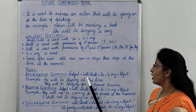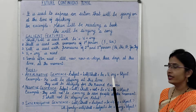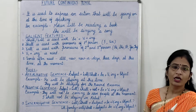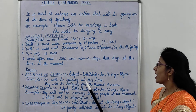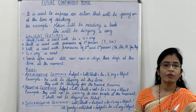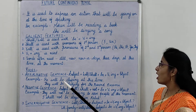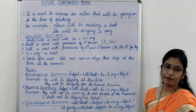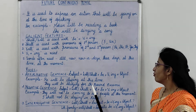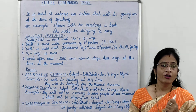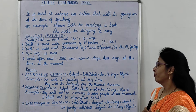Subject plus will or shall plus be plus first form of verb plus ing plus object. For example, he will be sleeping at this time. वह इस समय सो रहा होगा — will be sleeping. They will be studying for the board exam. वे board exam के लिए पढ़ रहे होंगे।